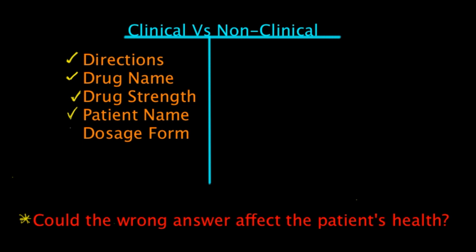Dosage form — that can kind of go with the drug name and strength. Dosage form includes things like tablets and capsules. If you're ever questioning how the dosage is supposed to be, you should always have a pharmacist determine that. Another one I want to include is allergies. If the patient is allergic to something and you're not sure, the pharmacist is going to have to verify the allergies.